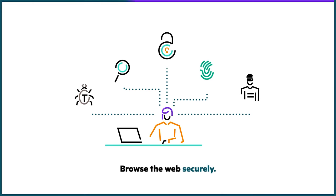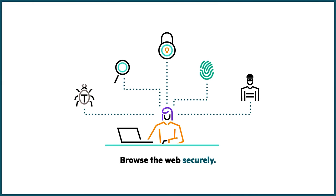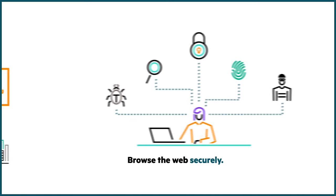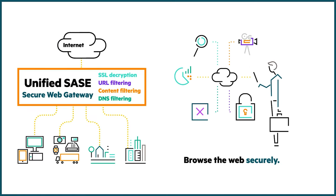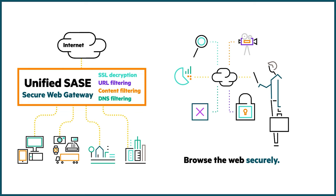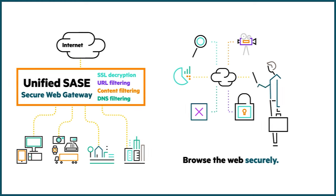SASE also protects employees from web-based threats like ransomware, phishing, and malware. Secure Web Gateway protects users with advanced SSL inspection, URL filtering, content filtering, and DNS filtering in real time for improved security and compliance.